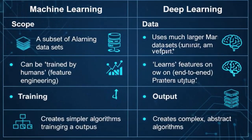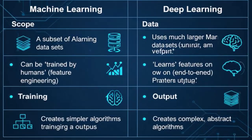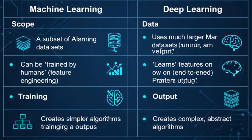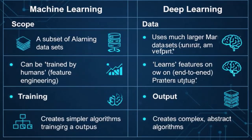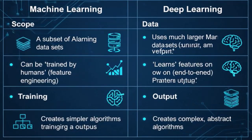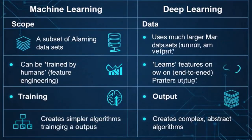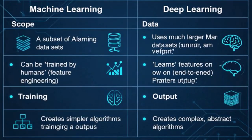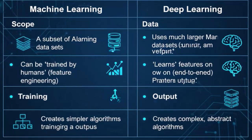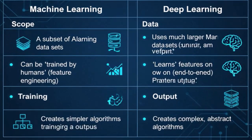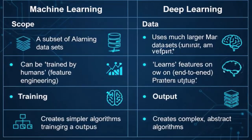Next, looking at data: machine learning models can often perform well with smaller to medium-sized data sets — they might still require a good amount of data, but not necessarily the massive quantities that deep learning thrives on. Deep learning, on the other hand, craves data. It performs best and unlocks its full potential when trained on extremely large data sets.